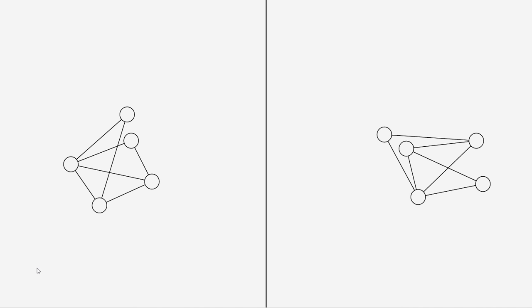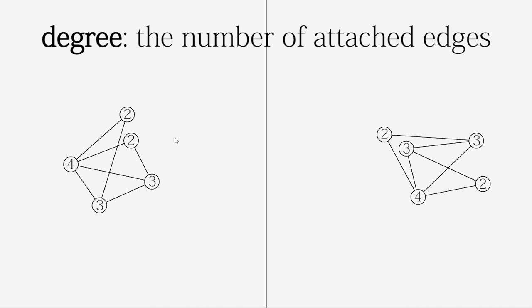The other thing to think about is the degree of the vertices. The degree of a vertex is the number of edges attached to it. We've got two vertices of degree two, two of degree three, and one of degree four. On the other side, we've got the same thing: two of degree two, two of degree three, and one of degree four. So that all matches — so far, so good. They could easily be isomorphic.